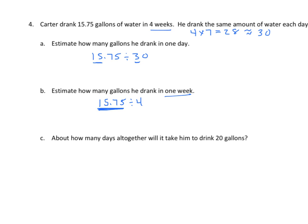Let's look at C — about how many days altogether will it take him to drink 20 gallons? The easiest way to do this is to figure out about how many gallons he drinks in a week. Once you have that, find out how many weeks it takes him to drink 20 gallons. Once we figure out how many weeks, we multiply that answer by 7 to get the number of days. I hope that helps with the homework, and those are some different approaches you can use to solve for A, B, and C.